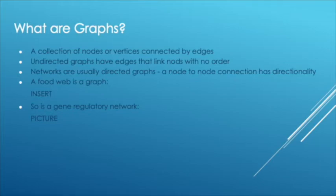There are different types of graphs to represent them, and one of these graphs is called an undirected graph, where the nodes are linked by edges with no particular order. Biological networks, however, are usually represented by directed graphs, where each node-to-node connection has a direction.